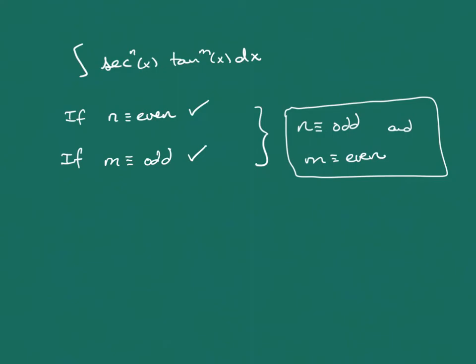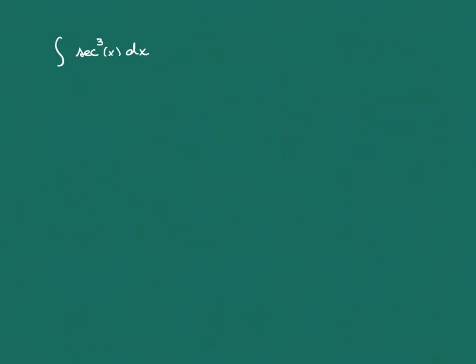One example we can start with is what happens if we have the power on secant being odd. Let's say we don't have a power of tangent at all — what happens when we just have the integral of secant cubed? Let's tackle this and see what happens.